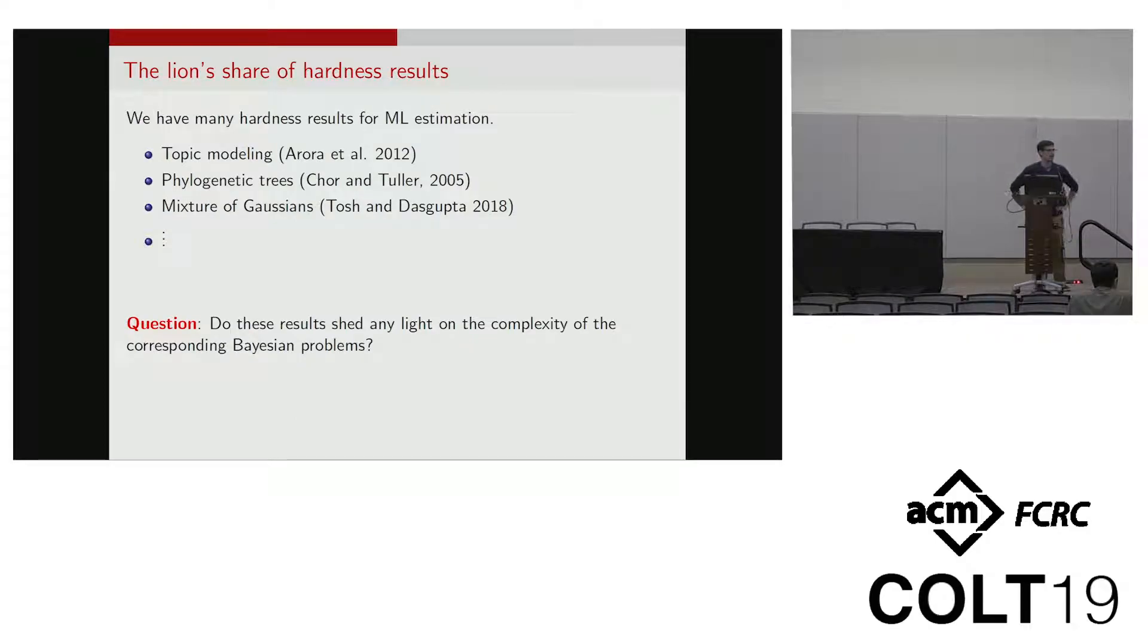As far as computational complexity goes, most of the hardness results that we know are for maximum likelihood estimation. For example, we know for topic modeling, phylogenetic trees, and mixtures of Gaussians that maximum likelihood estimation is in general a hard problem. But comparatively less is known about the corresponding Bayesian problems. In this work we pose this question: Is it possible to relate these tasks in terms of their computational complexity? What we show is that indeed you can, and that these Bayesian problems are at least as hard as maximum likelihood estimation, at least in certain cases of interest.